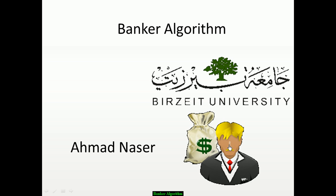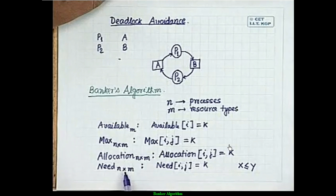Let's begin. First, we have deadlock avoidance. We use the Banker algorithm to avoid deadlock. We have this process requiring a resource, and another process requiring a resource, creating a cycle — so we need to avoid this. That's why we develop the Banker algorithm, which is used in bank systems and similar contexts.